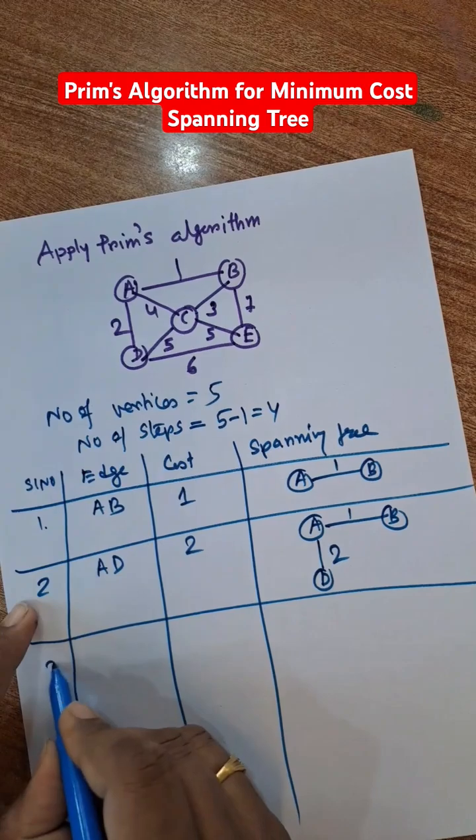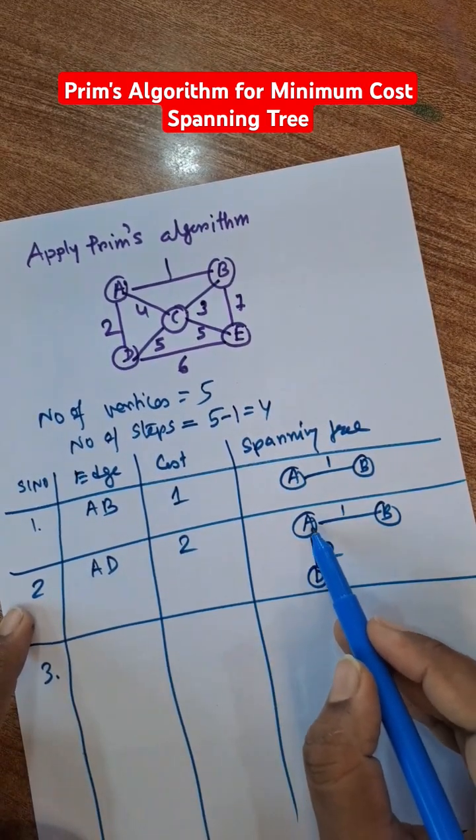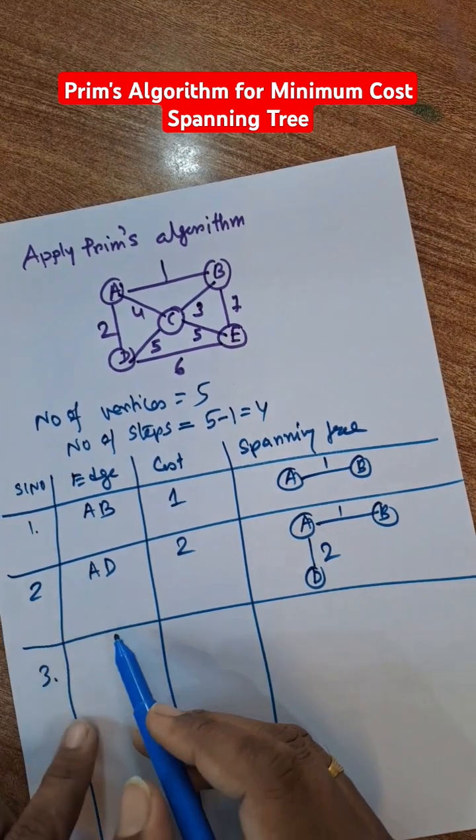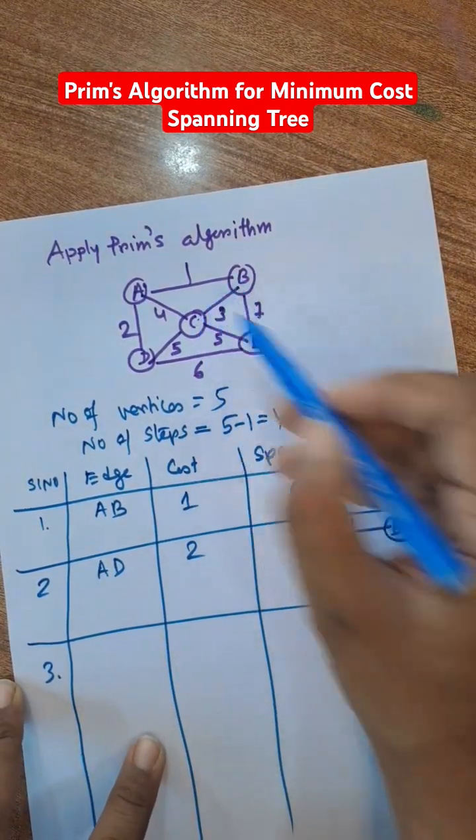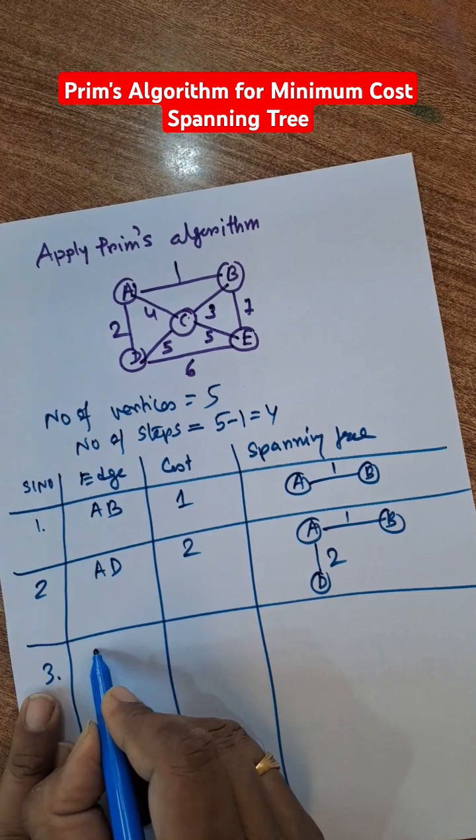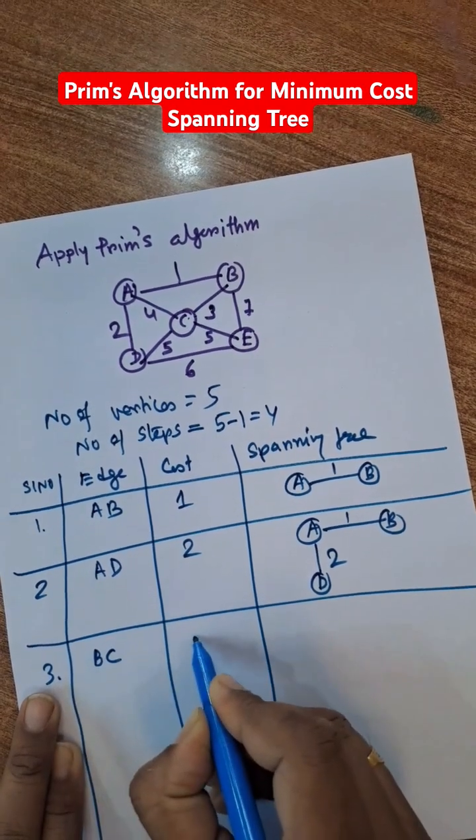Now next step, step 3. Connect the minimum from either A, B, or D. Here the minimum is... we can select 3. We can select 3, that is BC, that is 3.